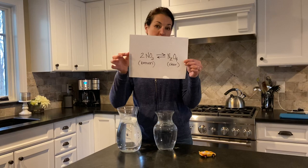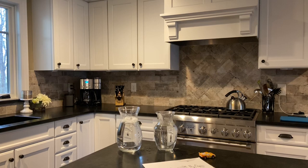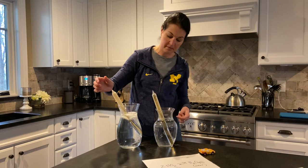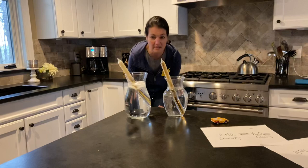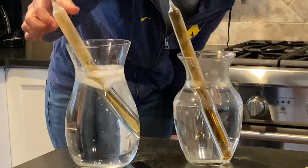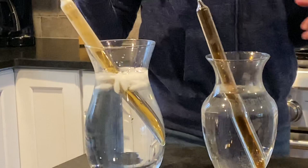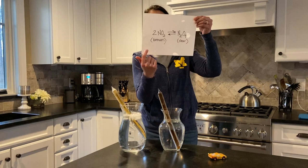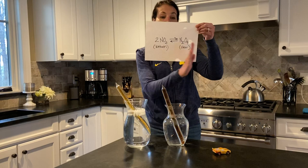When I get them out of the freezer they're both almost clear. I'm going to put one in hot water and one in ice water. You'll see that as they warm up, one turns brown — this one's doing it much slower. When I brought them out of the freezer they were both clear. In cold environments it favors the clear color, and in a warm environment it favors the brown color, so temperature is causing this equilibrium to shift.